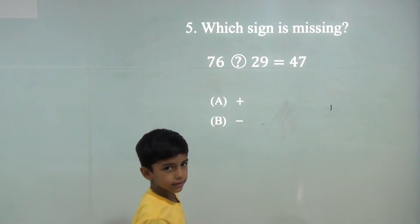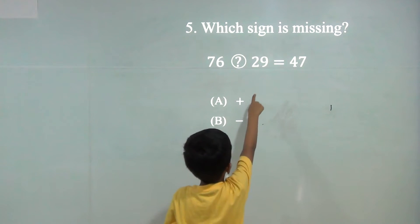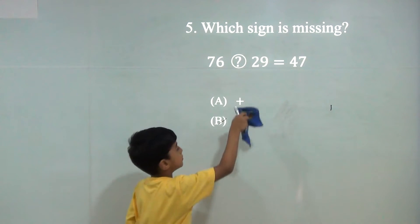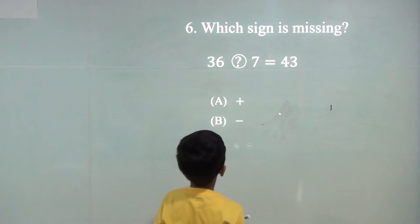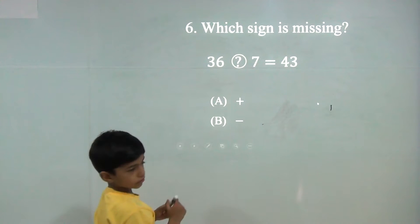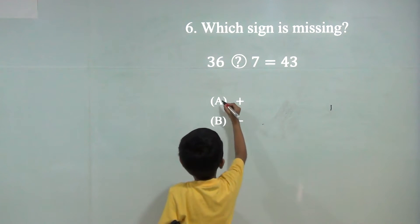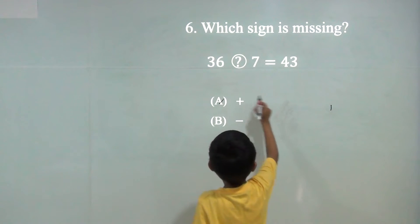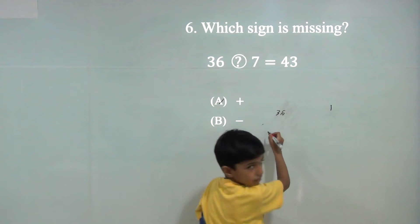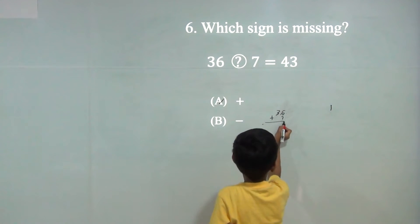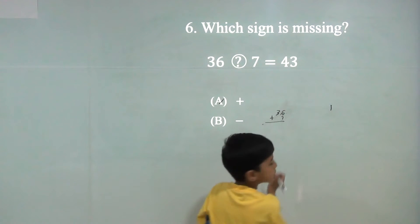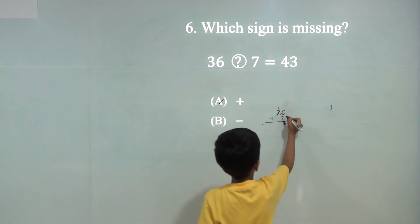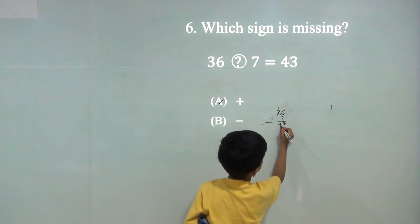Now we will do minus, because here is a smaller number. Now we will do plus, because here is a bigger number than here. 36 plus 7: 7 plus 7 is 14. 14 minus 1 is 13, so the answer would be 13. 3 plus 1 is 4, so the answer would be 43.